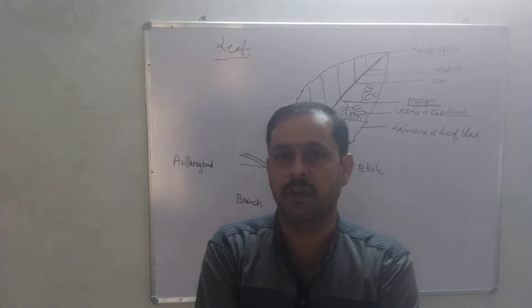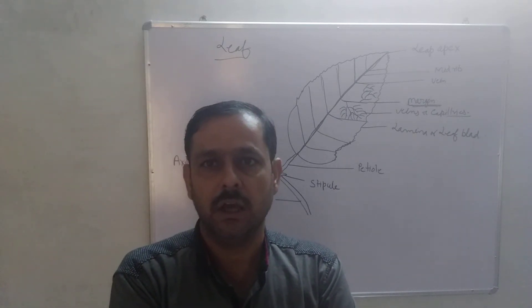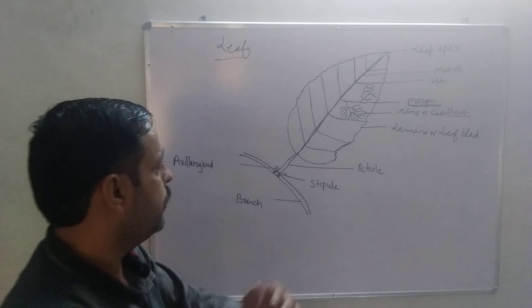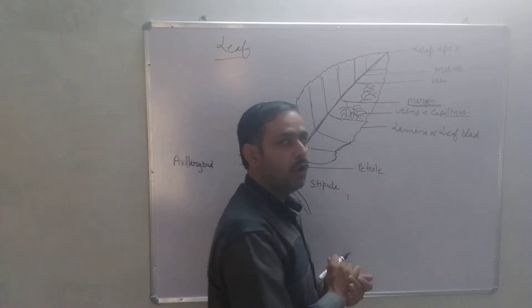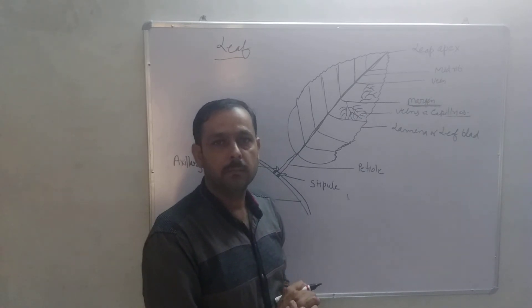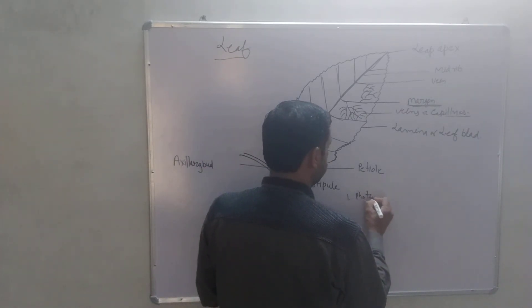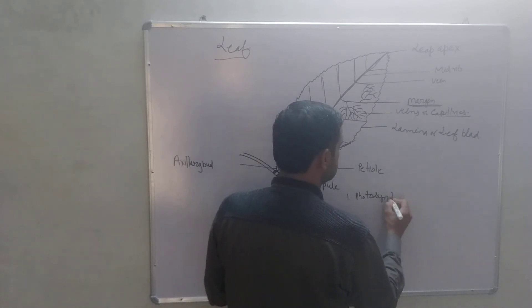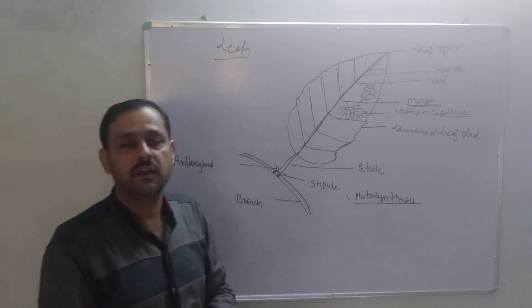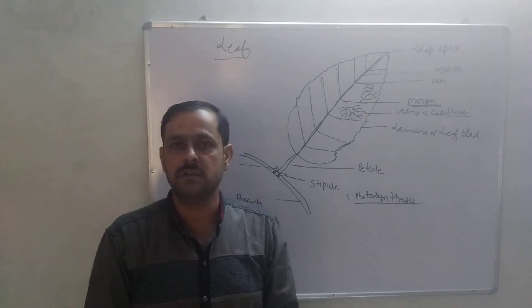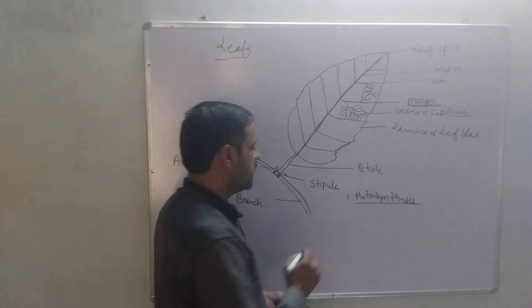Next topic is the function of leaf. There are three main functions of leaf. First of all, the leaf is the organ of food making — we can say it is the place of photosynthesis. The leaf is the place of photosynthesis, and photosynthesis is the function by which the leaf can make its food.